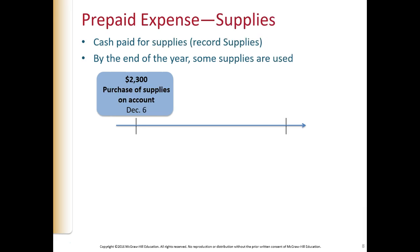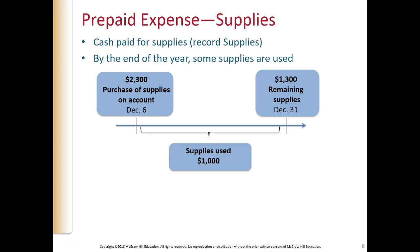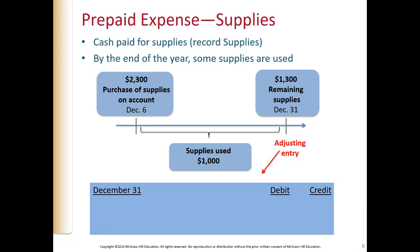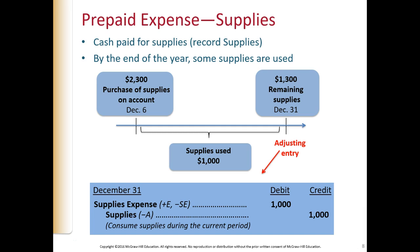Supplies work similarly to prepaid rent. On December 6th we purchased $2,300 of supplies on account. At the end of the year we see how much we used — we used $1,000 — which means $1,300 of supplies remain for next year. The adjusting entry records the portion used: debit supplies expense $1,000 and credit supplies $1,000. Earlier when we purchased supplies on account, we debited supplies and credited accounts payable. Now when we use $1,000 of those supplies, we debit supplies expense and credit supplies to show the portion used as an expense.